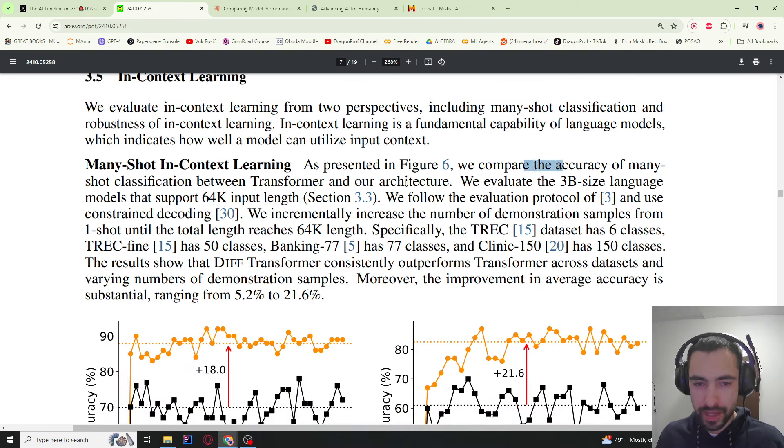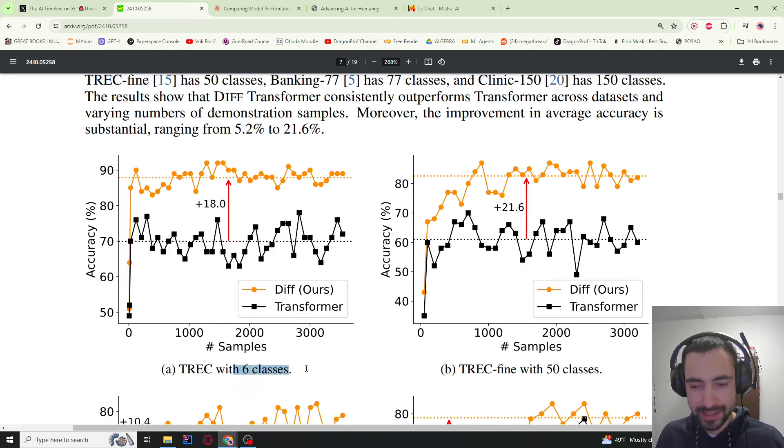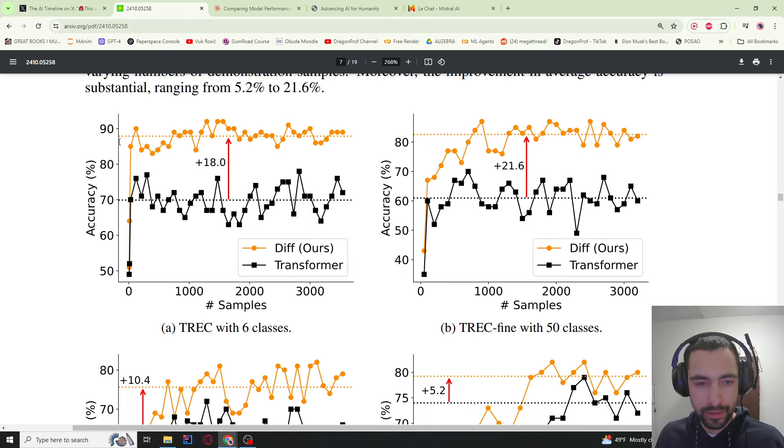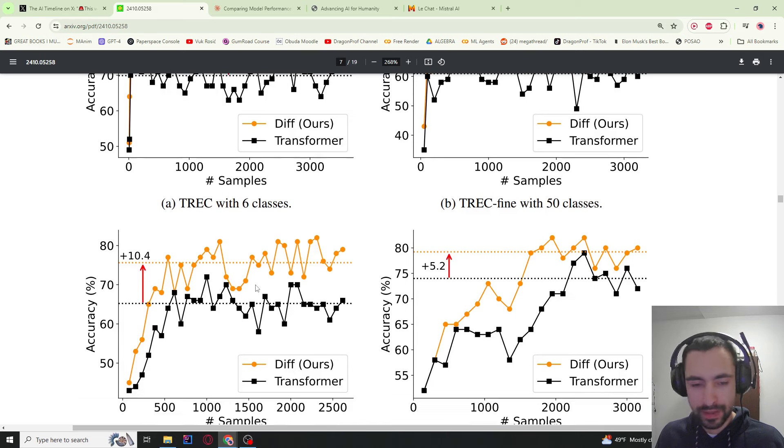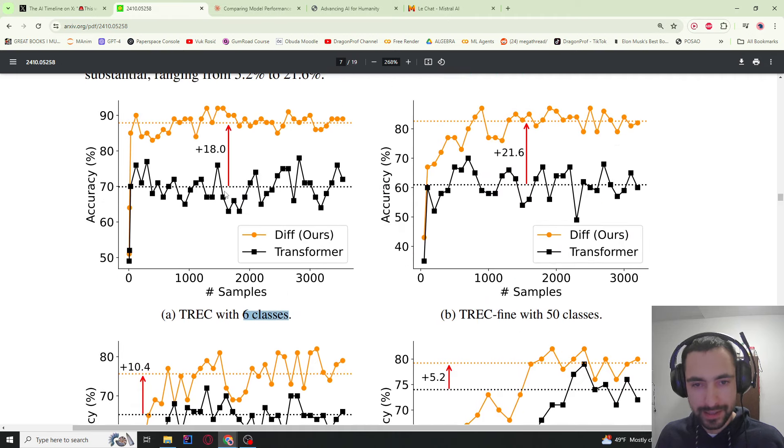Then we have many-shot classifications, so they give it a bunch of examples and tell it to classify the data into groups, into classes. So here we have 6 classes, 50 classes, 77 classes, 150 classes. The diff transformer outperforms, gets around 88% accuracy. Here the classic gets 70%, so this is 21% improvement. This improvement is 10.4% and 5%. So it looks like on these where there is less classes, the improvement is bigger.